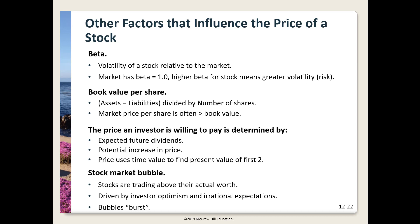Other factors influencing stock price include beta and book value per share. Beta reflects how volatile a firm's stock price is versus the overall market: a beta greater than one means this stock's price historically moves more than the market (up or down); a beta less than one means the stock is more stable than the market. Book value per share is total equity divided by shares outstanding — a firm's stock should trade above book value per share; a price below book value indicates investors don't believe management is doing a good job. Finally, be careful of market bubbles, where investors become overly optimistic and drive prices above reasonable levels.